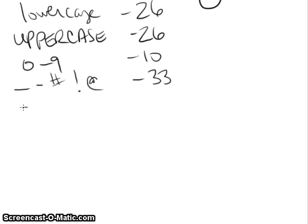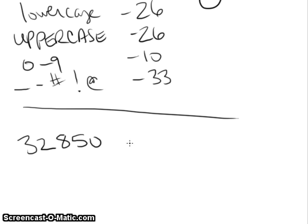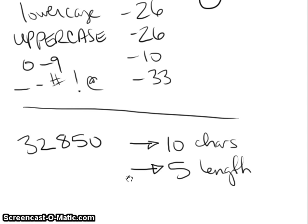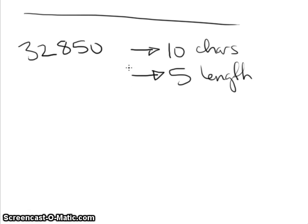So our first example has only digits, and it has five of them. So it uses only these 10 possible characters, the digits. So there are 10 possibilities for each spot in a password like this and it is of length 5.